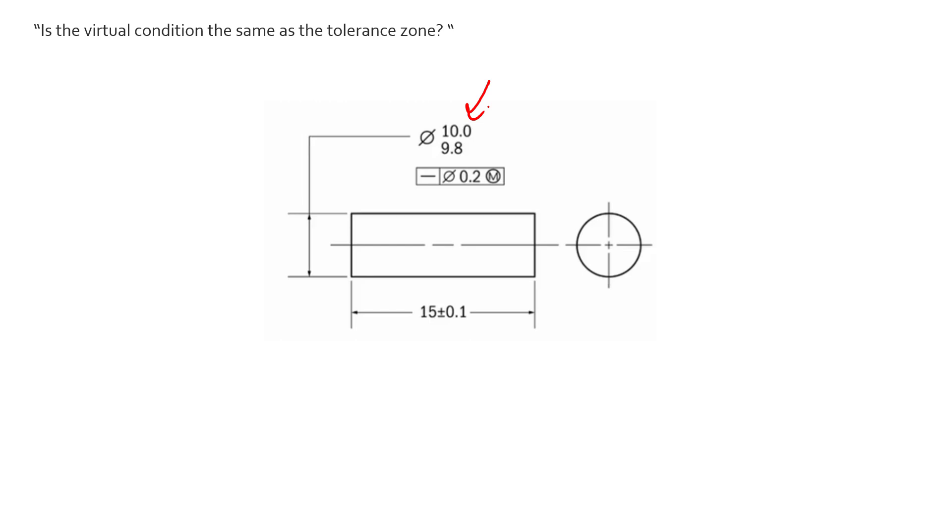There are a couple things going on here, and we're going to break this example down into a few different aspects. What we have right now is a size dimension. We know the size or the diameter of this is held to two limits: those limits being 10 and 9.8. The MMC limit, or maximum material condition, is 10, and the LMC limit, or least material condition, is 9.8. We have two limits of size, and that can be seen as a tolerance in and of itself.